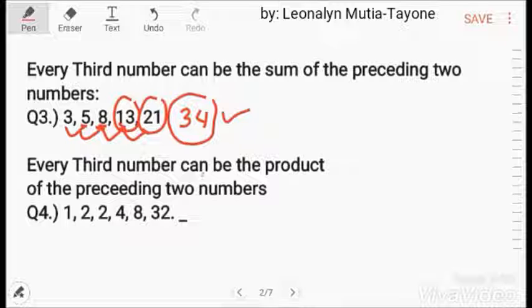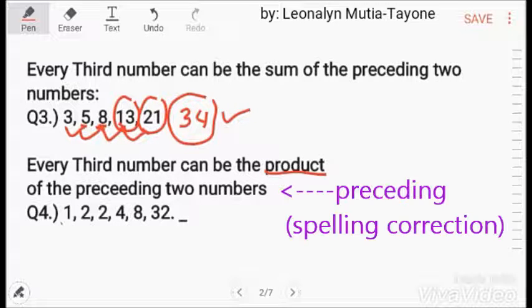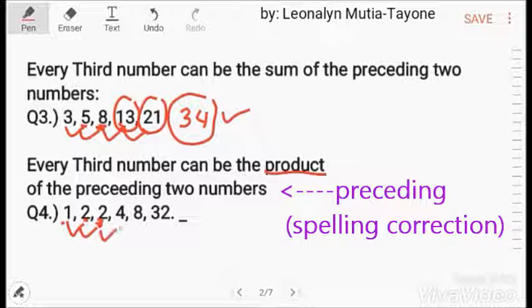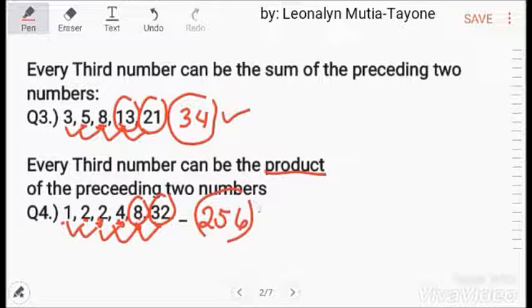Every third number can be the product of the preceding two numbers. 1 times 2 equals 2. 2 times 2 equals 4. 2 times 4 equals 8. 4 times 8 equals 32. So, 8 times 32 equals 256. This is the answer.